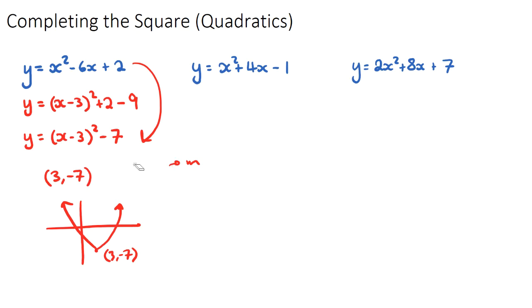Okay, I'll do the second example. So if we have y equals, we start with our bracket, we put x, and we halve the four, so plus two, close bracket squared. And then we have our remaining constant minus one, and then always a minus sign, and it's the number inside the bracket squared. So two squared is four. So we're going to have y equals x plus two squared minus five.